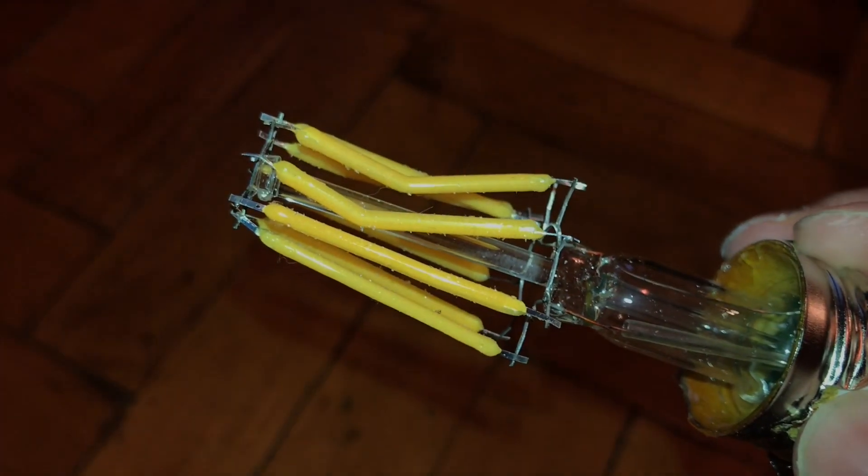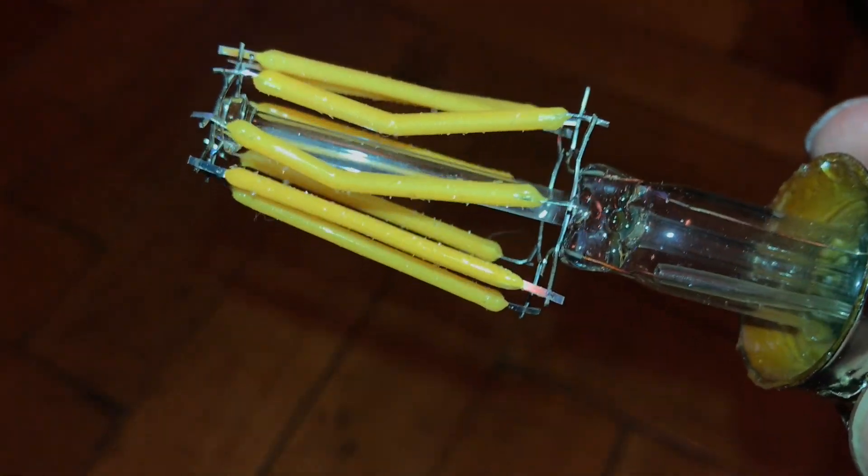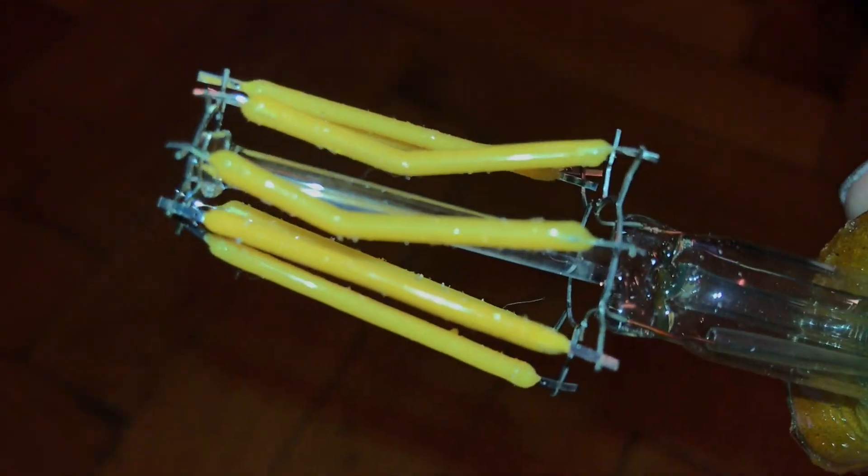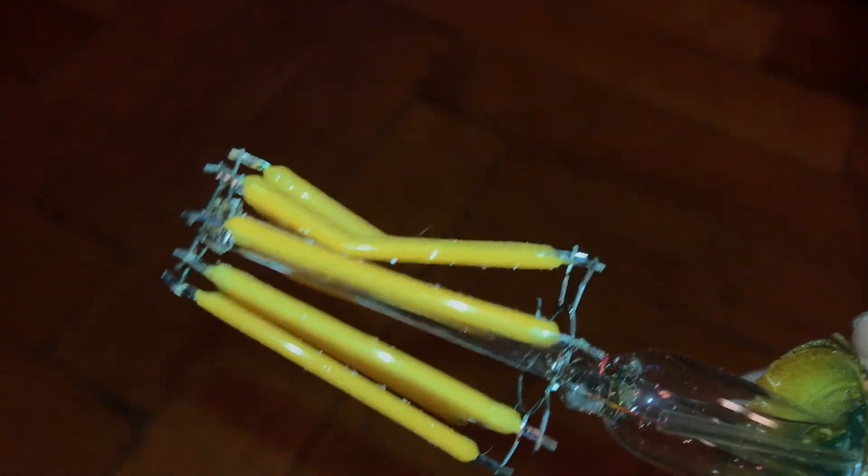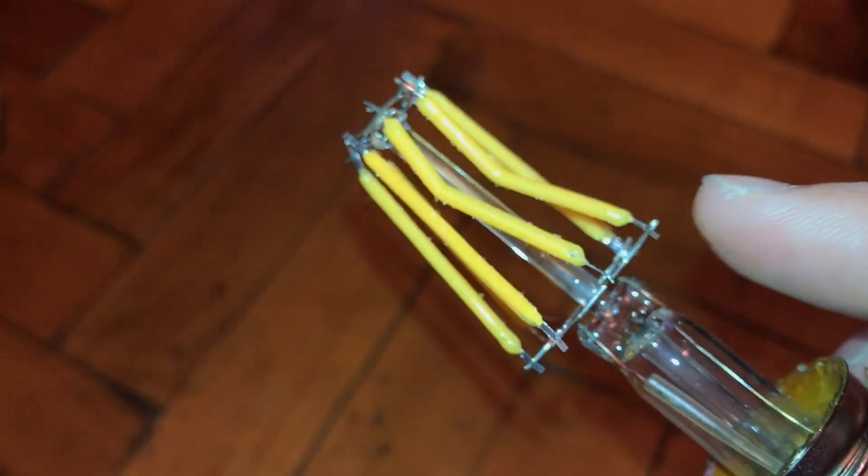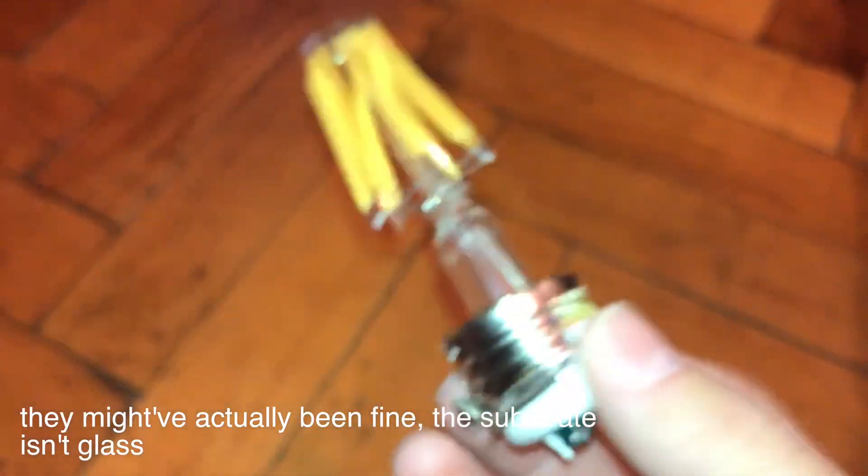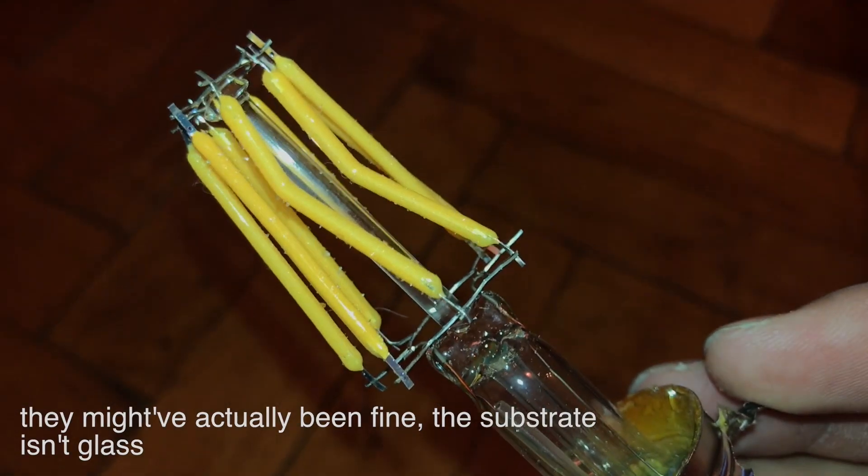So there's tiny, tiny shards of glass that caught on to the soft phosphor coating. Obviously the two filaments are broken so we won't be able to test this in situ.